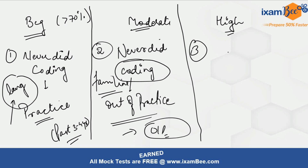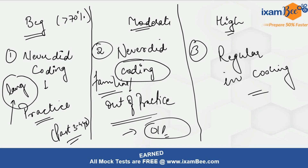The third category is the high level, or pro. These people are regular in coding in at least one language — they are coding in their jobs or in their free time; they are just good coders. As per the statistics, only 5% of people who apply in SEBI IT are under this category. Most people are at beginner level, and around 25% are in the moderate category.